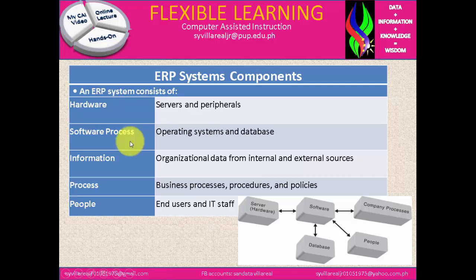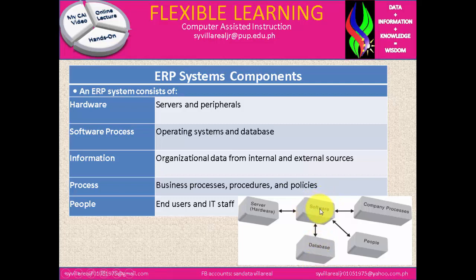Under hardware, we have servers and peripherals. Software covers the operating system and database. Information refers to organizational data from internal and external sources. Process includes business processes, procedures, and policies. People refers to users and IT staff. The software is connected to the database because we install it — this software is considered to be an operating system. The people look at the operating system to use the database and server, and the company processes the software, which can be online in a real-time situation.